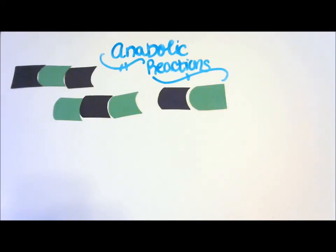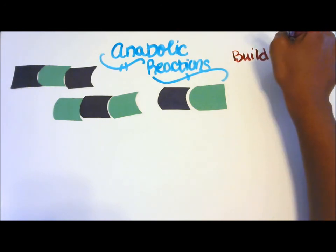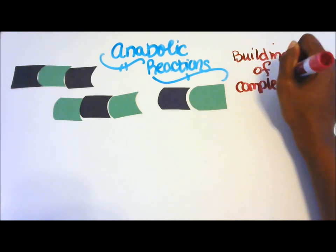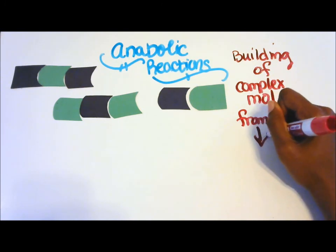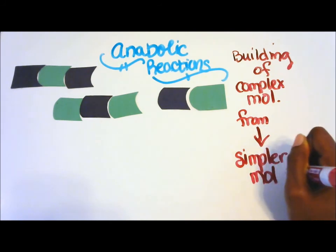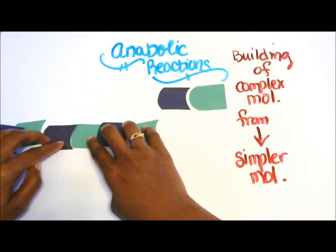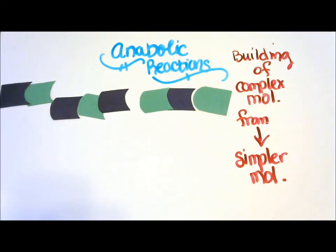Anabolic reactions are the building of those complex large molecules from those smaller, simpler molecules. So we have our simpler molecules and it's the building of large molecules. In anabolic reactions there is a process called dehydration synthesis.